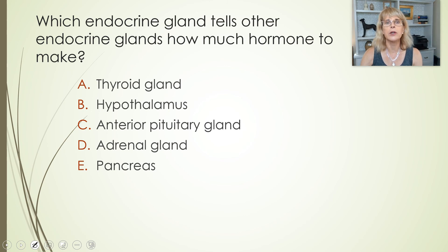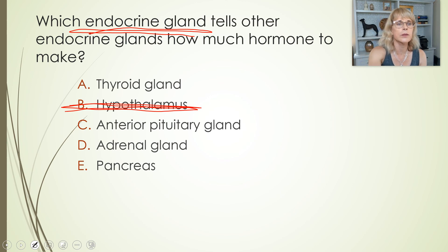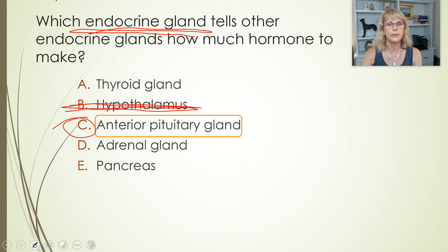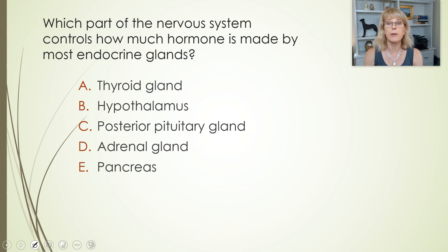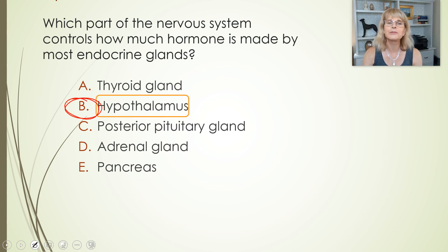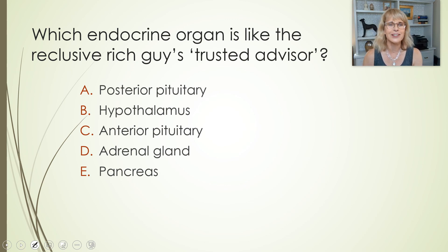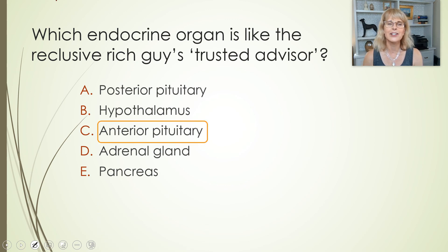Which endocrine gland tells other endocrine glands how much hormone to make? That's a little tricky, because the hypothalamus is not an endocrine gland — it's neural tissue, part of the brain. So which endocrine gland tells the others what to make? The anterior pituitary. Which part of the nervous system controls how much hormone is made by most endocrine glands? That's going to be the hypothalamus. Which endocrine organ is like the manager in the Starbucks analogy? The anterior pituitary.